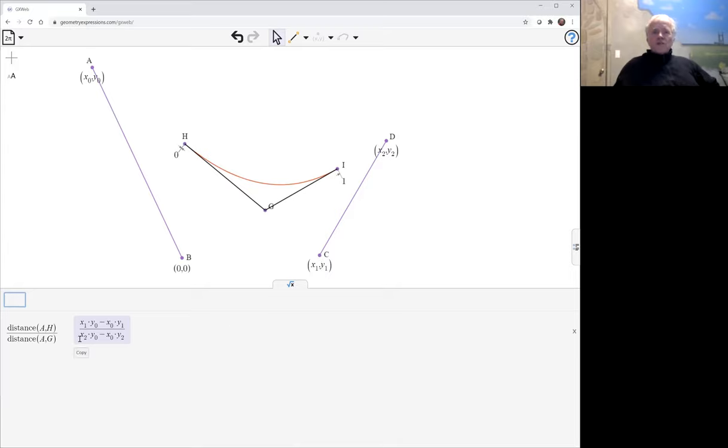Then if you look at the denominator, this is just the cross product of the vector from B to A with the vector from B to D. So the denominator is the area of the rhombus circumscribed by A, B, D.